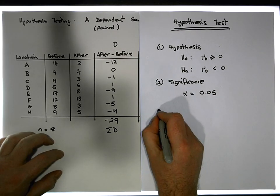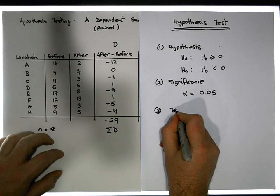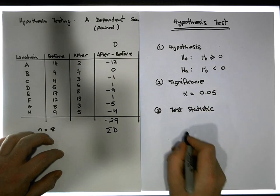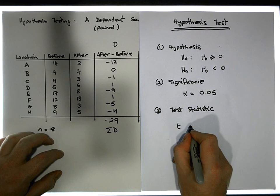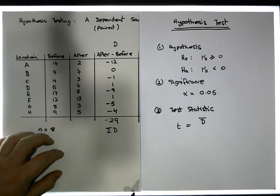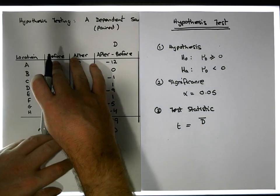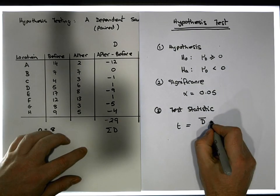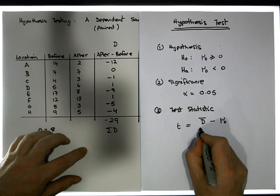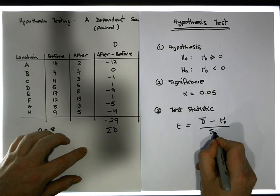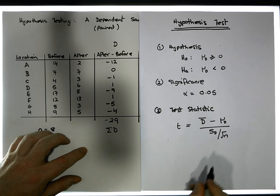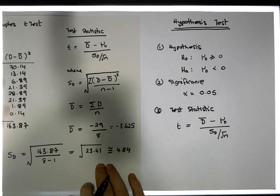Step three is to construct our test statistic. Our test statistic is a t-statistic: t equals the average difference observed minus what we hypothesize the difference to be, divided by the sample standard deviation of the differences over the square root of n.